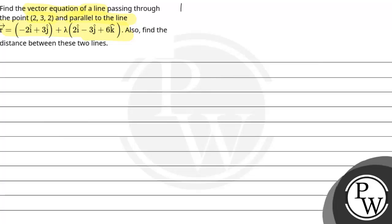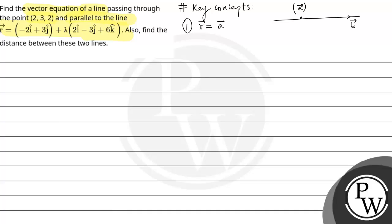Let's write the key concepts first. If a line is parallel to some vector b and is passing through a point with position vector a, then the equation of the line is r = a + λb, where b is the direction vector parallel to the line.